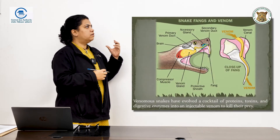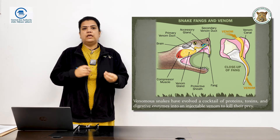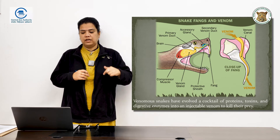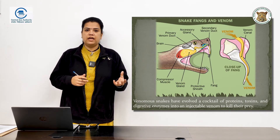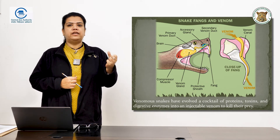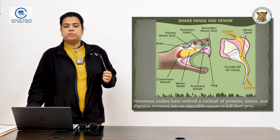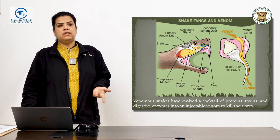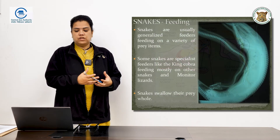Venomous snakes have venom fangs and a venom gland. The fangs that deliver venom into prey are like hypodermic needles — hollow, with the ability to pass venom directly into the prey. The fang is connected by a venom duct to the venom gland, and behind this is a compressor muscle that regulates the amount of venom squeezed out. Venom is a cocktail of proteins, toxins, and digestive enzymes that begins digesting the prey as soon as it is injected.